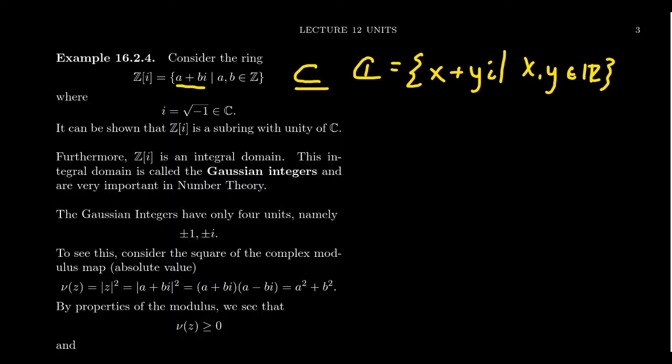The integers only have two units, plus or minus one. Gaussian integers actually have four units: plus or minus one and plus or minus i. We know those to be units. One and negative one are their own inverses multiplicatively speaking, and then of course i times negative i is equal to one. So i and negative i are inverses of each other, and these are the only ones.